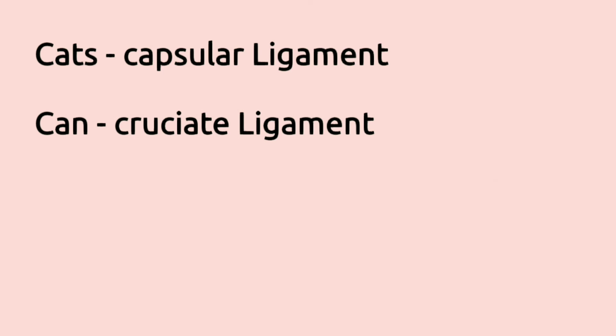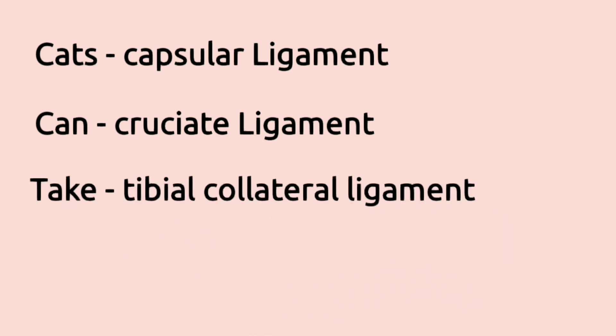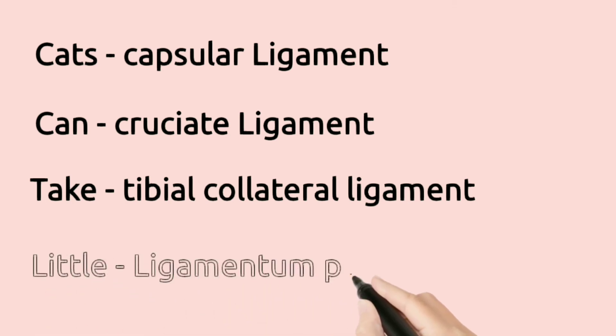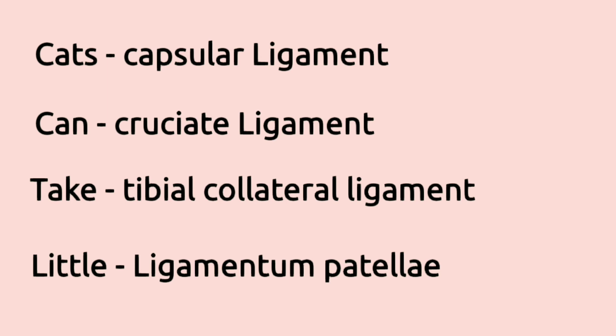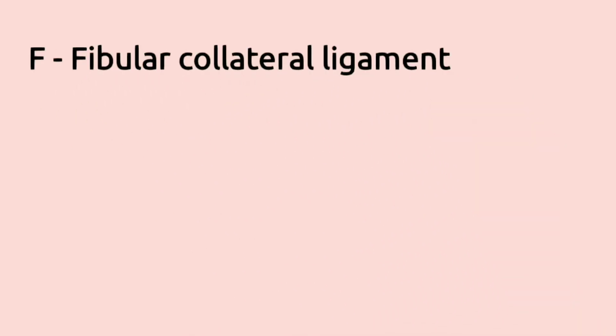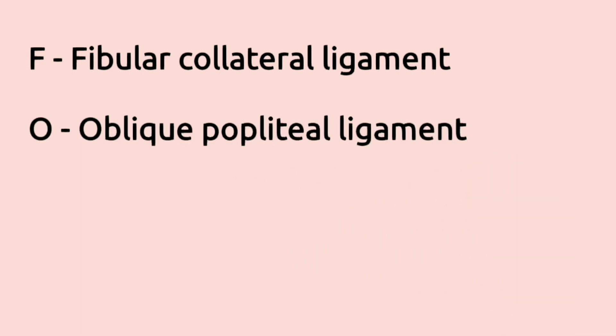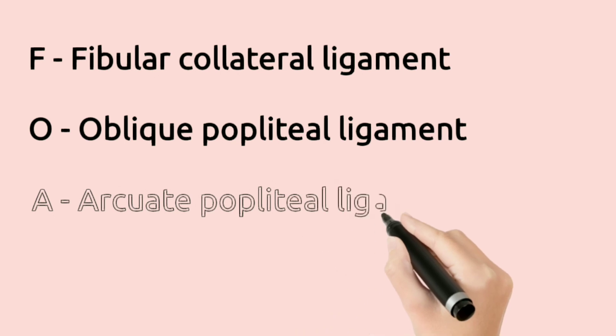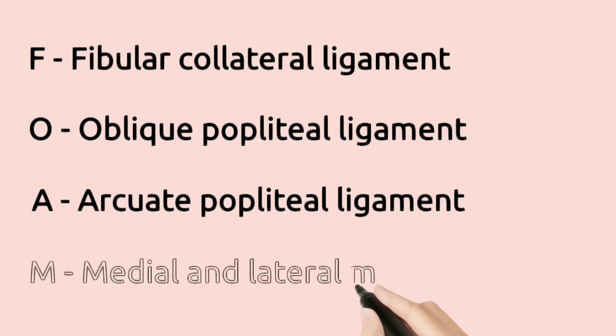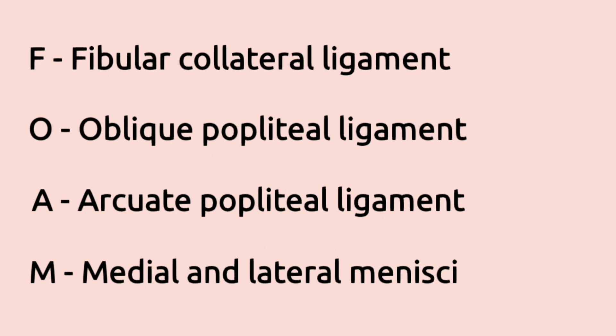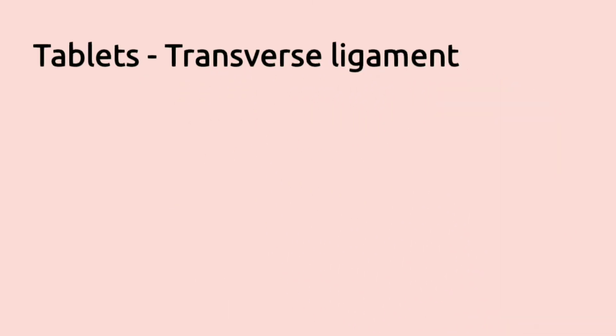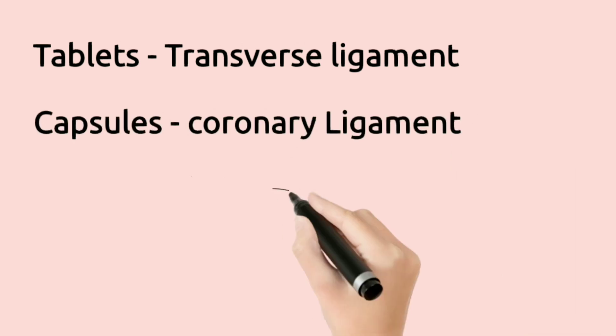C in 'Cats' stands for Capsular ligament. 'Can' stands for Cruciate ligament — anterior and posterior. 'Take' stands for Tibial collateral ligament. 'Little' is Ligamentum patella. 'Foam' is broken into four parts: F is Fibular collateral ligament, O is Oblique popliteal ligament, A is Arcuate popliteal ligament, M is Medial and lateral menisci. 'Tablets' stands for Transverse ligament, and 'Capsules' stands for Coronary ligament.